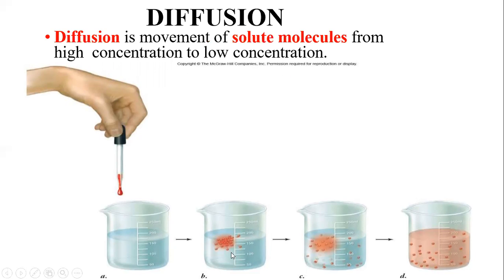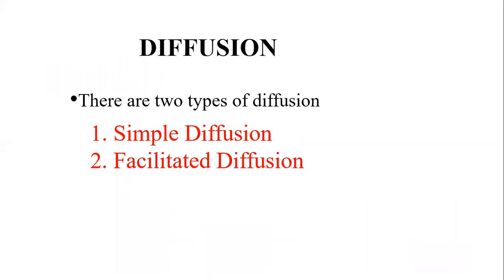Through diffusion, colored molecules spread slowly into a solution and at the end are uniformly distributed. This demonstrates the diffusion of molecules through the cell.